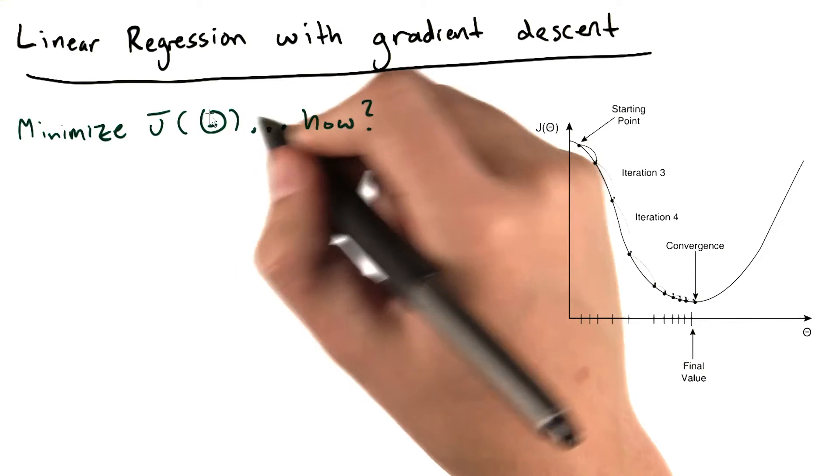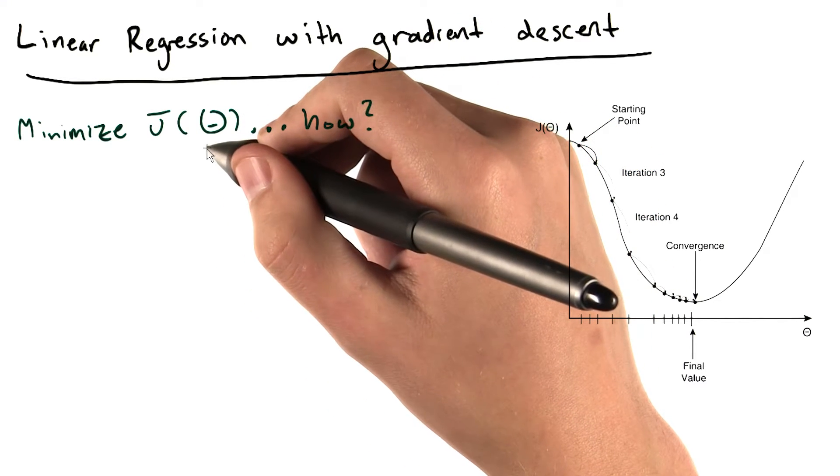So, how do we find the correct values of theta to minimize our cost function, J of big theta?